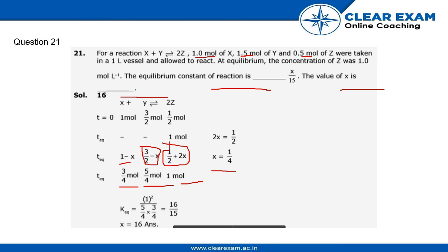The formula of equilibrium constant is concentration of [z]² divided by concentration of [x] times concentration of [y].